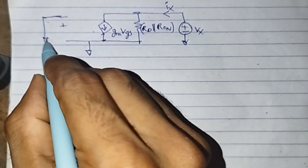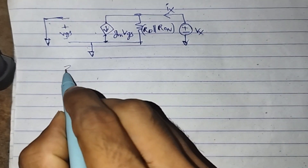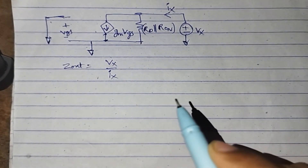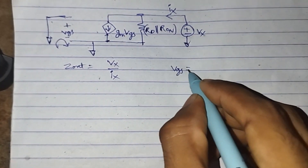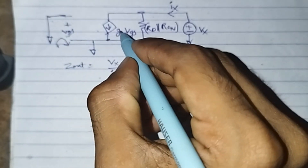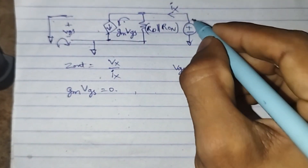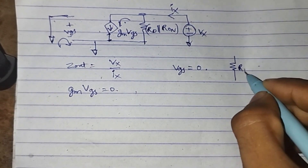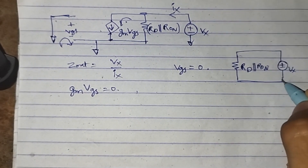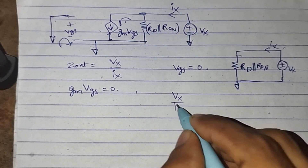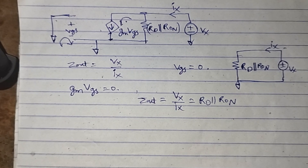To find the output impedance, we ground the input voltage, connect the test source VX at the output node, and find VX over IX. Applying KVL to the input loop gives VGS equals zero, so the gm·VGS current source equals zero and carries no current. The equivalent circuit reduces to RD in parallel with R_on connected to VX, giving output impedance Z_out equals RD parallel R_on. Thank you for watching.